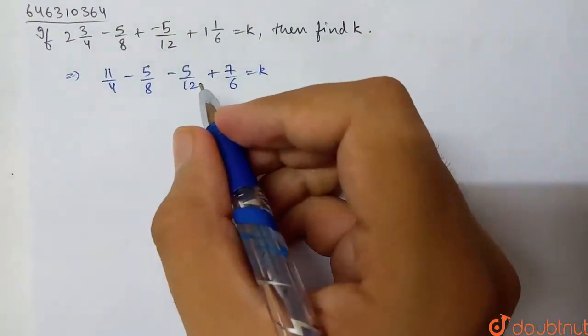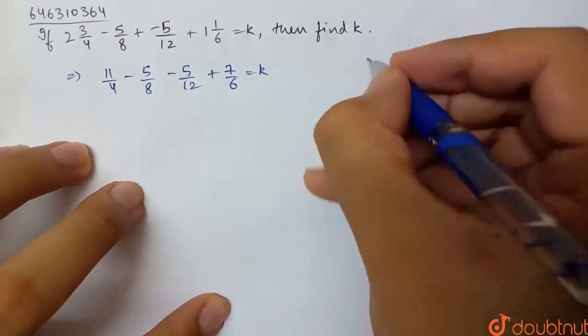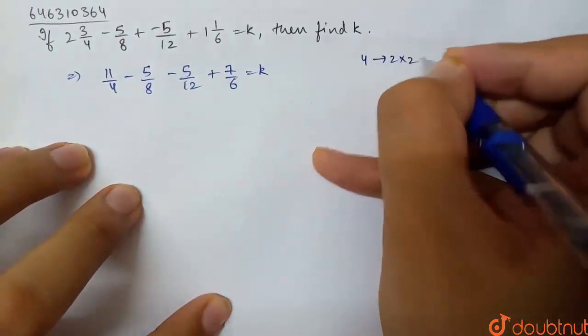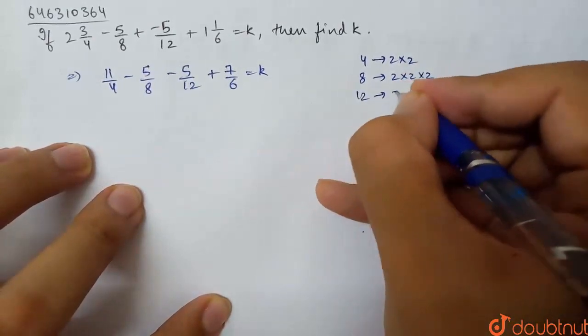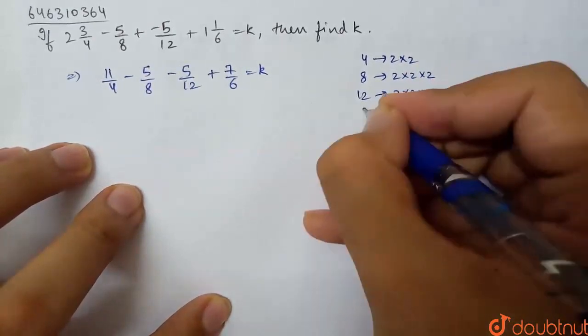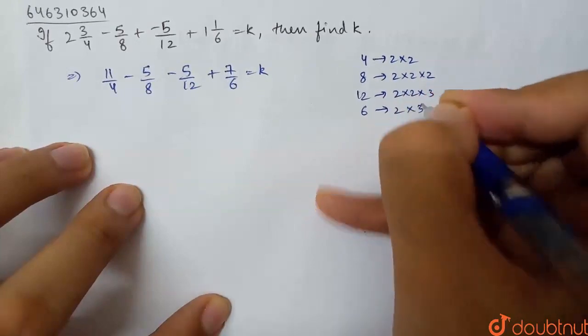Now I have to take the LCM. We need to find the factors: 4 is 2 times 2, 8 is 2 times 2 times 2, 12 is 2 times 2 times 3, and 6 is 2 times 3.